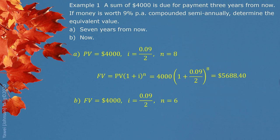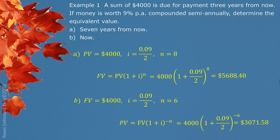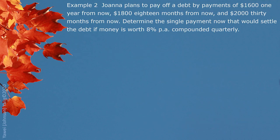Part B: if we pay it now, that means the $4,000 is considered as the future value. The 3 years gives us 6 compounding periods — 6 half-years. So we are looking for the present value. Put the information into the formula properly. Pay attention — the exponent is negative. We find that if we pay the debt now, we should pay less: $3,071.58.